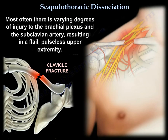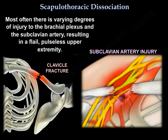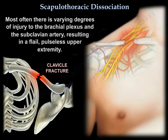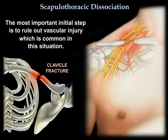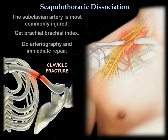Most often there are varying degrees of injury to the brachial plexus and the subclavian artery, resulting in a flail, pulseless upper extremity. The most important initial step is to rule out vascular injury, which is common in this situation. You may find reduced pulses or no pulses in the upper extremity, and the subclavian artery is most commonly injured.